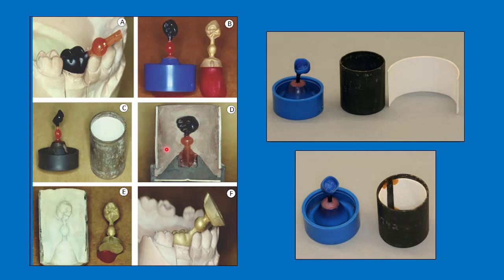The casting ring with the wax pattern and crucible former are poured with investment. Then they are heated in a procedure called the burnout procedure, in which all the wax of the wax pattern and the sprue are removed or burnt, leaving the shape of the crucible former, the sprue, and the wax pattern as a mold. During casting, the metal is forced through the crucible former and pushed through the sprue to occupy the space of the wax pattern. We then check the result on the cast, and if it is acceptable, we remove the sprue and finish the crown.